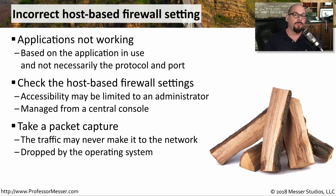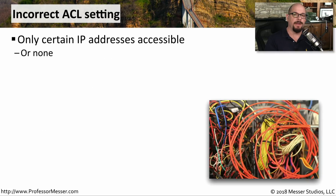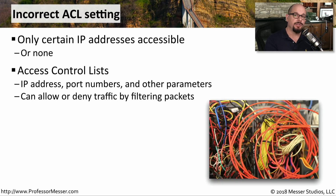In environments where the host-based firewall is administered centrally, perform a packet capture from an external device so you can see exactly the traffic leaving and returning to that computer. Access control lists can provide extensive security options — you may find they block some traffic while other traffic flows properly. ACLs can filter by IP address, port number, and many other options, and can allow or deny traffic based on a combination of criteria.